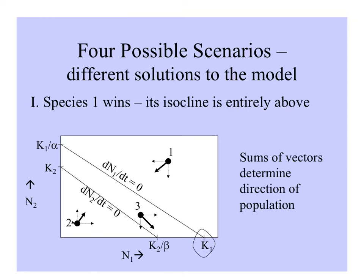There are four different ways these lines can be arranged and four possible scenarios for different outcomes. In the first, species 1's isocline is entirely above species 2's isocline. If we add the vectors at a point where species 1 and species 2 are both above both their isoclines, species 1 will decrease in the x direction and species 2 in the y direction, and the sum will take the point in that direction.